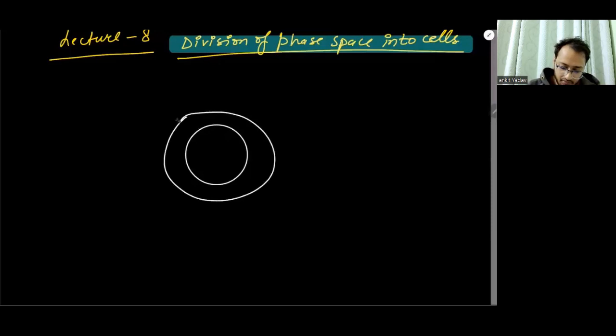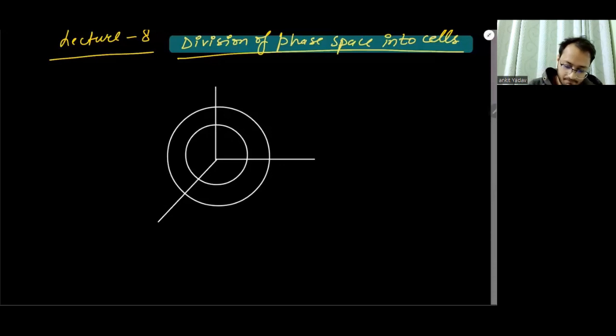This is a momentum space. As you can see, the coordinates are defined in momentum space. This is p, and this radius here is p plus dp. So obviously this is dp.